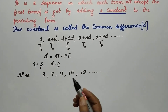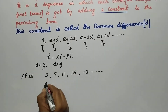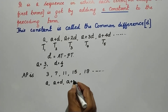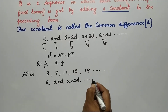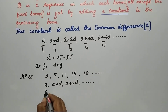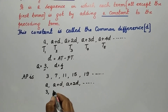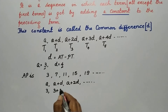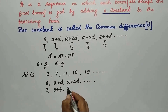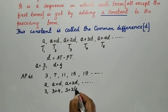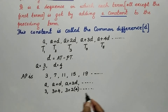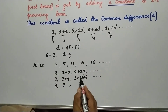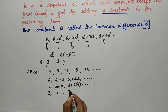Alternatively, write the standard form A, A+D, A+2D, and so on, then substitute A equals 3 and D equals 4. The first term is 3; the second term is 3 plus 4, which is 7; the third term is 3 plus 2 times 4, which is 3 plus 8, equaling 11; and it continues.